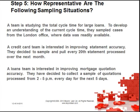How representative are the following sampling situations? A team studying the total cycle time for large loans samples cases from the London office where data was readily available — here we could have geographical variation. A credit card team samples every 20th statement processed over the next month. A loans team collects a sample of mortgage quotations processed from 2 to 5pm every day for the next 5 days. Pause the video and consider what possible variation you could see from sampling in each situation.